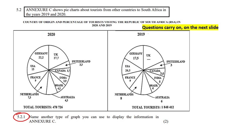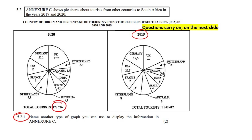Let me explain. In 2019, there were nearly two million tourists coming to South Africa. We can see that Switzerland accounted for 3% of all people, Germany was 17.5%, and there's France, Netherlands, Australia, and so on. In 2020, it's the same type of chart but with a lot fewer tourists.